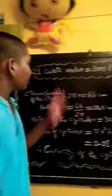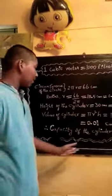We all know that 1 cubic meter is equal to 1000 liters. Hence, the capacity of the cylinder is 10 liters.